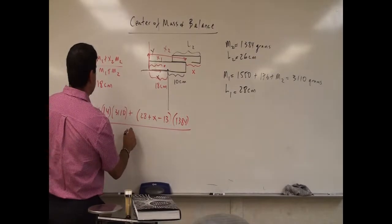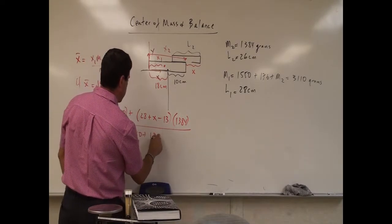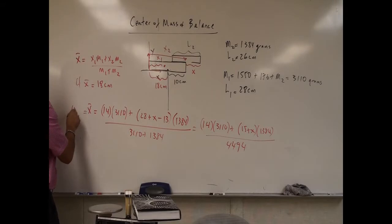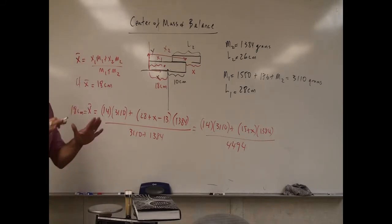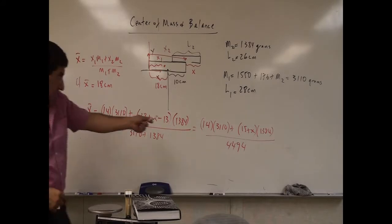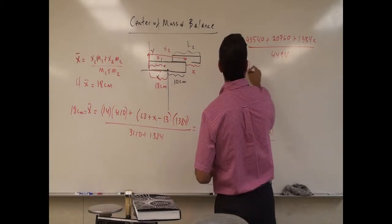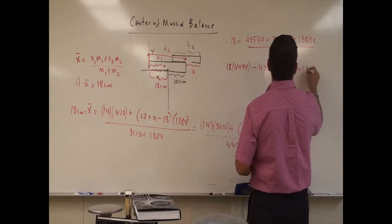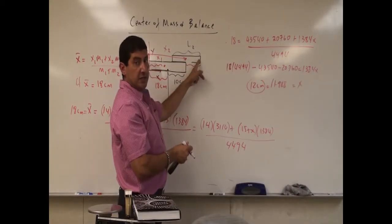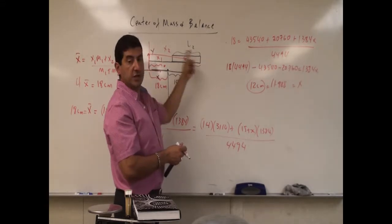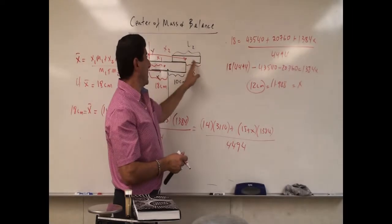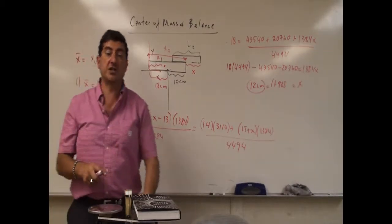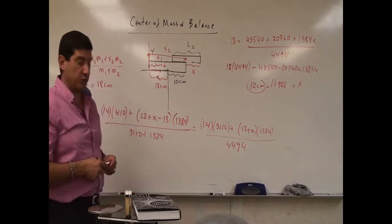Dividing by M1 + M2 = 3,110 + 1,384, and setting the center of mass equal to 18 centimeters, we get 4,494 − 43,540 − 20,760 = 1,384·X, which gives X ≈ 12 centimeters. Since the whole top book is 26 centimeters, that means I can have almost half of it on the outside. Let's do the experiment and see how it works out.